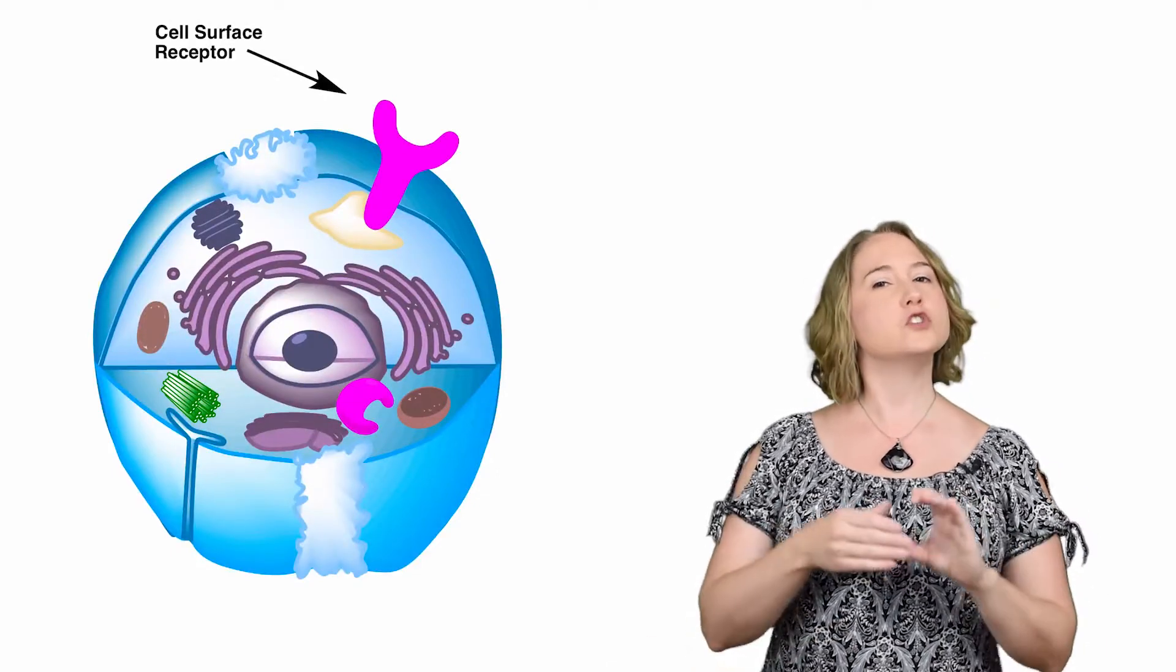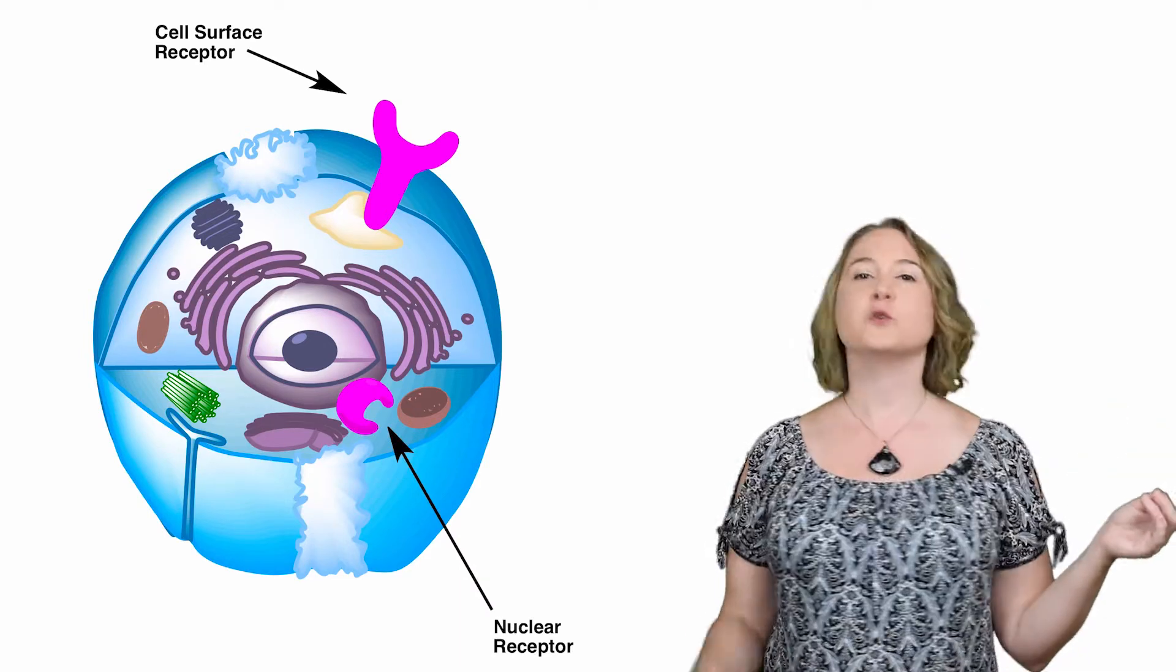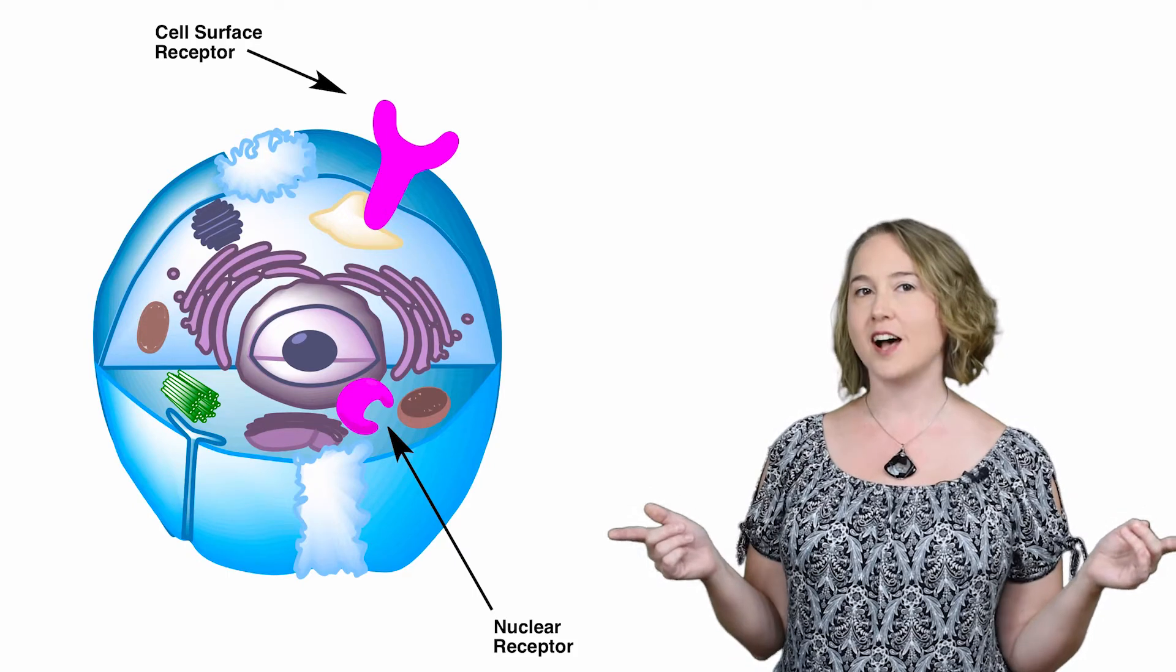Receptors are another very common drug target. These are proteins either located on the surface of cells or within the cells on the surface of the nucleus. Binding of a drug to a receptor can either turn on or turn off a process in the cell.